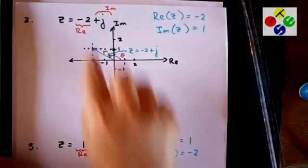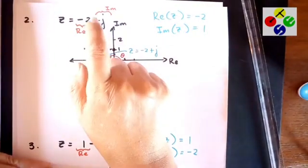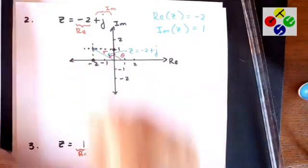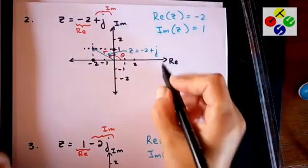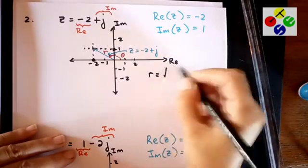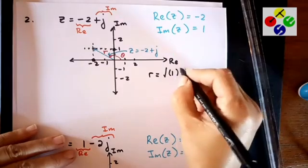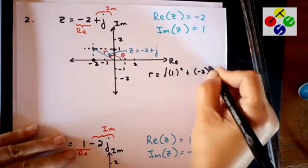So we want to convert from rectangular to polar form, which means you need to find your modulus and your argument. In order to find your modulus, we use Pythagoras. So R is going to be equal to the square root of, it would be 1 squared plus minus 2 squared.